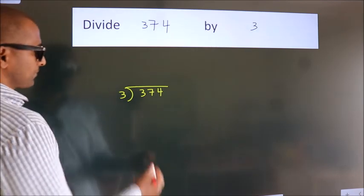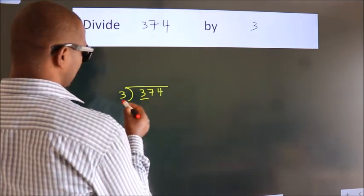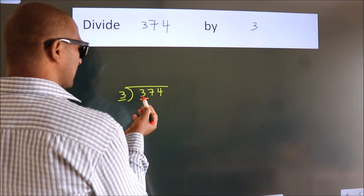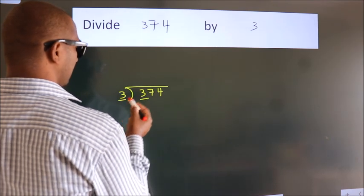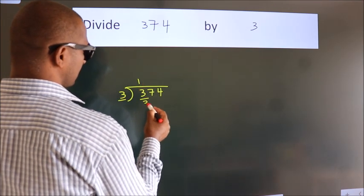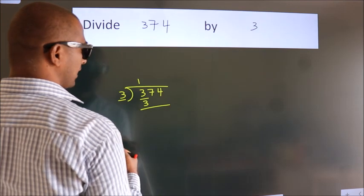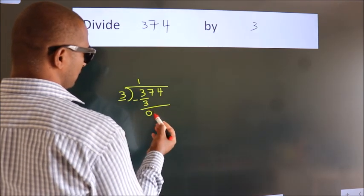Next. Here we have 3, here 3. When do we get 3? In 3 table, 3 once, 3. Now, we should subtract. We get 0.